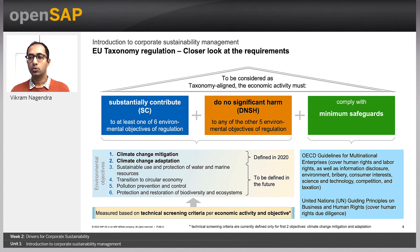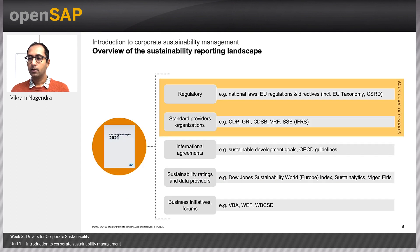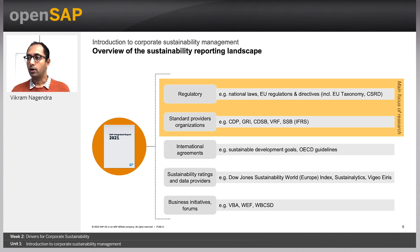Unit 3 of this week will cover this and other regulations in more detail. Another key driver of corporate sustainability efforts are the reporting frameworks, standards, and requirements that need to be met in annual reports. These requirements are driven by either regulations, standard setters, international agreements, ratings and ranking providers, or in some cases by alliances and forums. Corporate commitment to some of these requirements is a matter of prioritization, capacity allocation, and regional and local requirements.